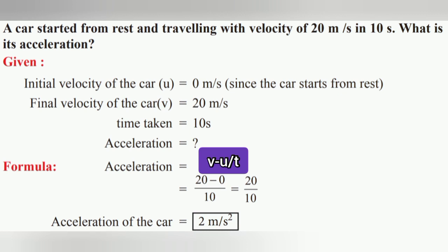Initial velocity u = 0 (starts from rest), final velocity v = 20 m/s, time taken t = 10 seconds. Acceleration = (v − u) / t = (20 − 0) / 10 = 20 / 10 = 2 metres per second squared.